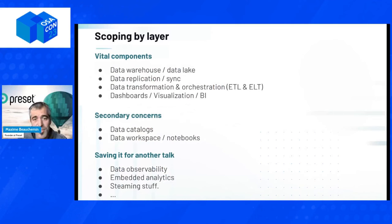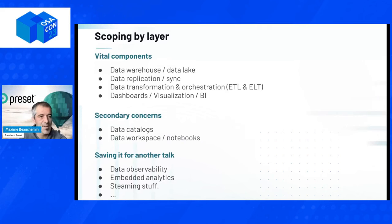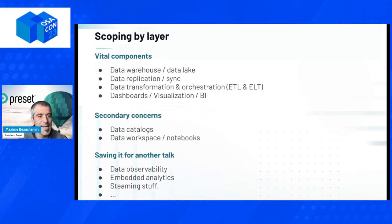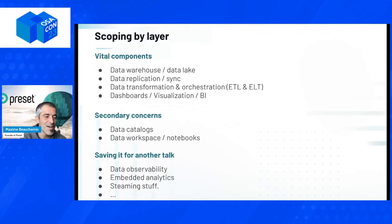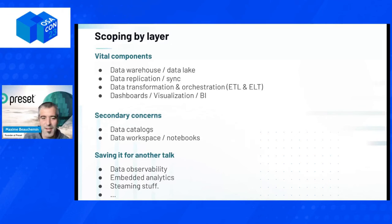Getting a little more specific about the scope for this talk: I'll cover what I call the vital components. If you're a small startup or starting a data team from zero, you're going to need a data warehouse, a data replication solution, a solution for doing data transformation, and some sort of business intelligence, data visualization, and dashboarding solution. Those are the primary things I'm going to talk about today. Then I'll get into things you probably need as your data team grows — data catalog, data workspace or notebook solutions. There's a lot I won't cover because there's not enough time, and streaming and data observability are not necessarily my area of expertise.